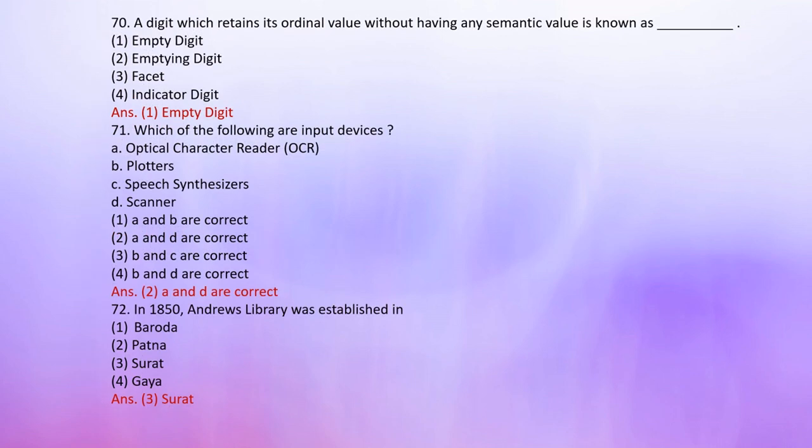Number 70: A digit which retains its ordinal value without having any semantic value is known as — 1. Empty digit, 2. Empting digit, 3. Facet, 4. Indicator digit. The correct answer is 1: Empty digit.